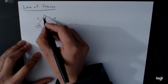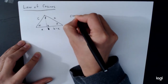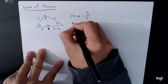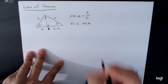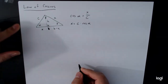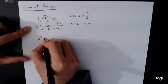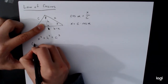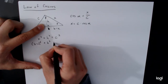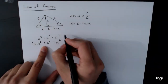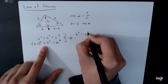The right triangle on the left-hand side tells us that cosine of alpha equals x over c — cosine is adjacent over hypotenuse — so x equals c times cosine alpha. We'll label the height h. The triangle on the left gives us x² + h² = c², and the triangle on the right gives us (b − x)² + h² = a². From these two equations, we can solve for h²: h² = c² − x².